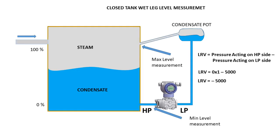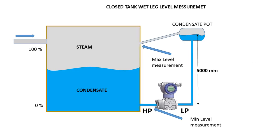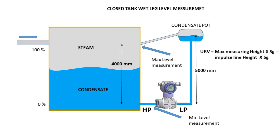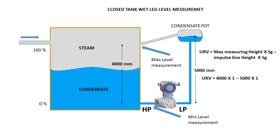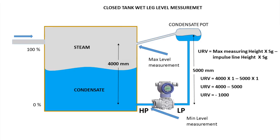So the LRV equals minus 5000. Next we calculate URV. For URV, use the equation: maximum measuring height times specific gravity of liquid, minus impulse line height times specific gravity of filled liquid. The maximum measuring height is 4000 millimeters. So the URV equals 4000 times 1 minus 5000 times 1, which gives 4000 minus 5000, so the URV equals minus 1000.